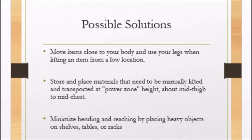For possible solutions, we are advised to move items close to our body and use our legs when lifting an item from a lower location. Store and place materials that need to be manually lifted at power zone height — about mid-thigh to mid-chest. When dropping objects, they must be placed at power zone height to avoid awkward body posture. Minimize bending and reaching by placing heavy objects on shelves, tables, or racks.